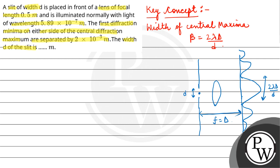The first minima is this minima and this minima. These two first diffraction minima on either side of the central diffraction are separated by width of central maxima. Our parameters have focal length 0.5 meter and wavelength 5.89 × 10^-7 meter.